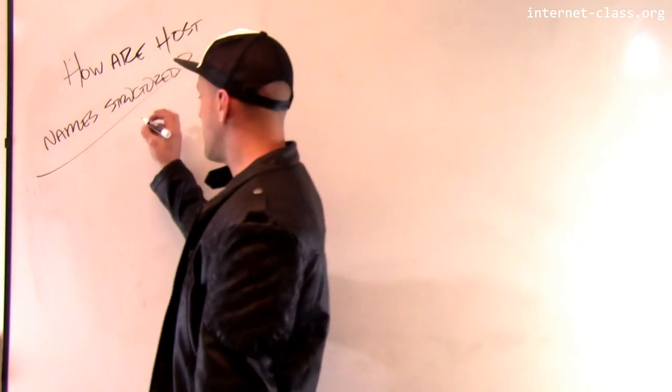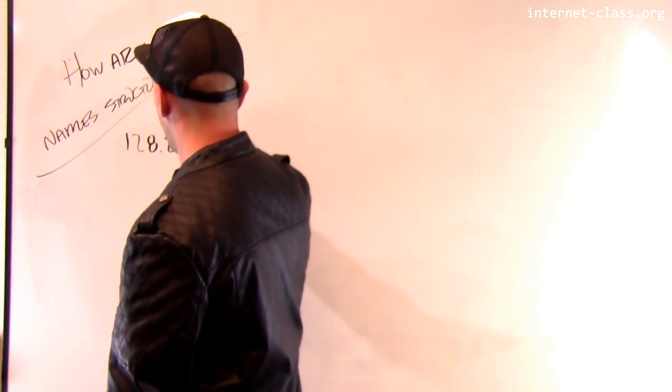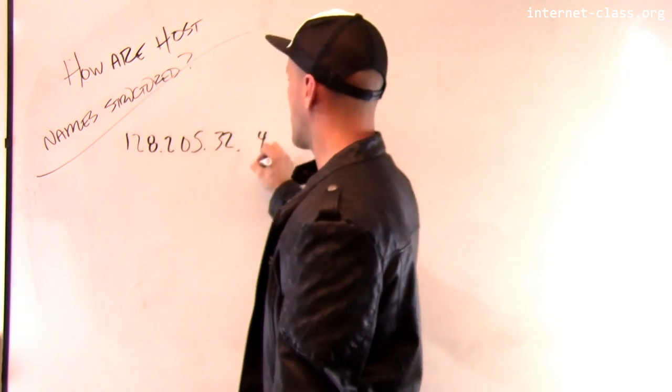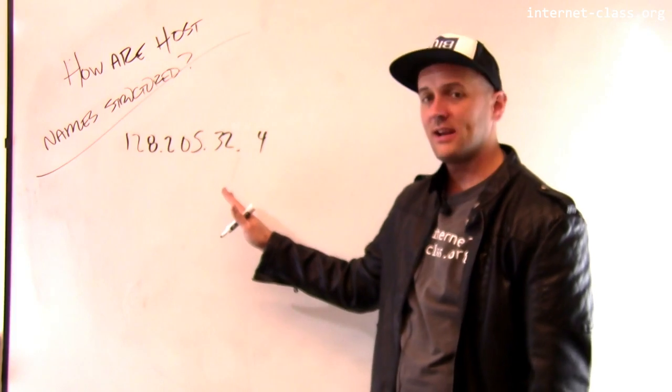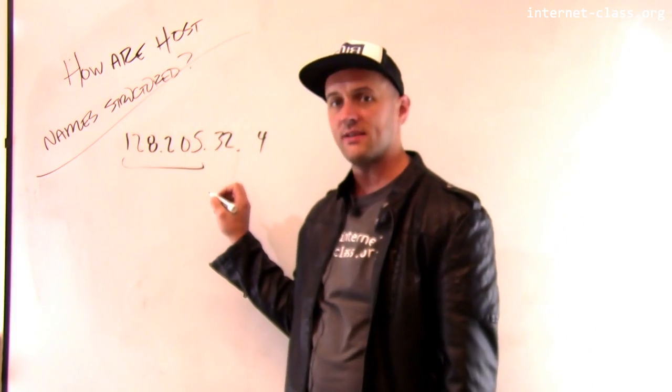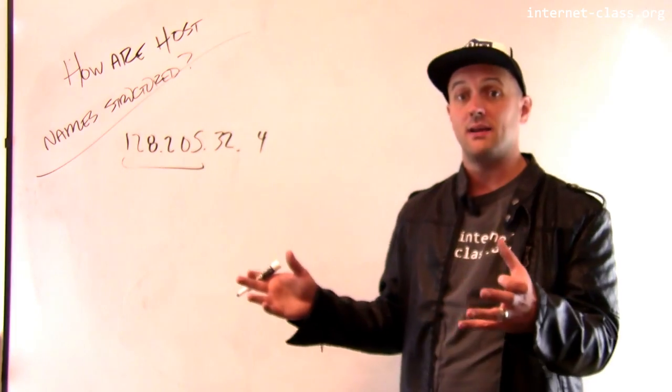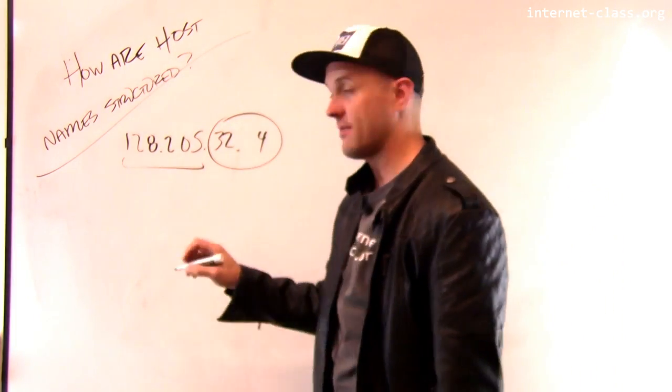Remember that with an IP address, I had this dotted notation, so 128.205.32.4, and the left part of the IP address identified an entire organization. So 128.205 is a prefix that's registered by the University of Buffalo, and the rest of this identifies a specific host.